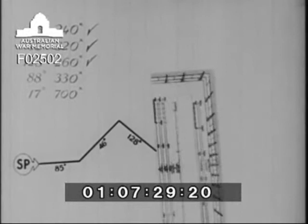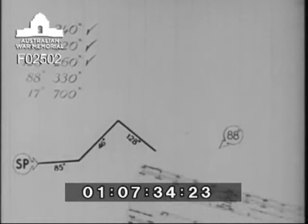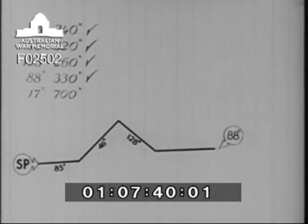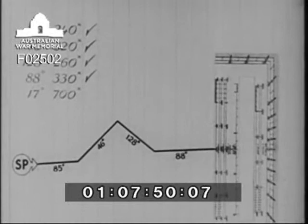Fourth leg, 88 degrees, distance 330 yards. That brought them to the river bank. Finally, he draws his line of observation across the river: distance 700 yards on the observed bearing of 17 degrees.